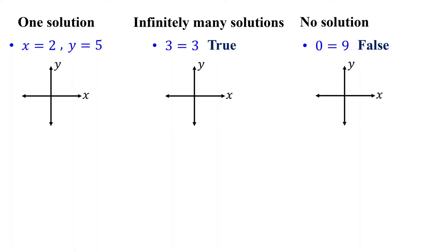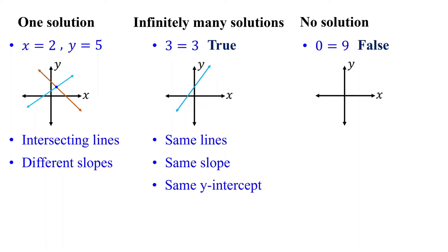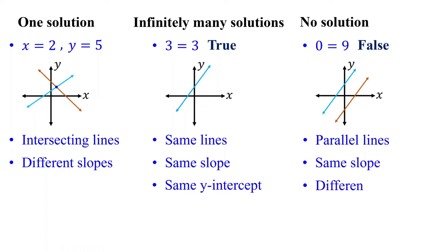Using the graphical method, for one solution the lines of the two equations intersect at a point — that intersection is the solution — and the lines have different slopes. For infinitely many solutions, the lines are exactly the same, right on top of each other, sharing the same slope and y-intercept. For no solution, the lines are parallel and will never intersect; they have the same slope but different y-intercepts.